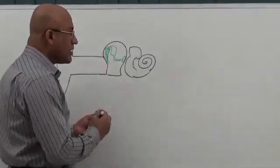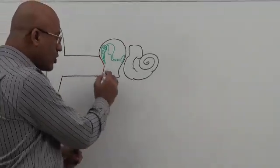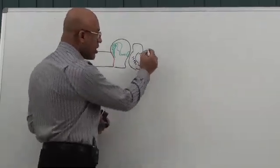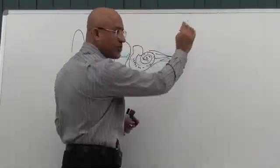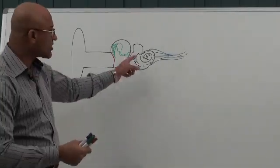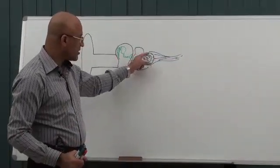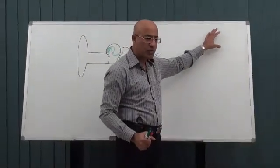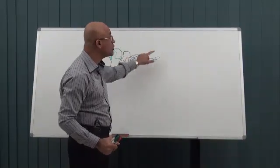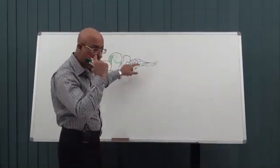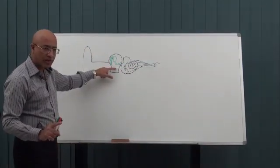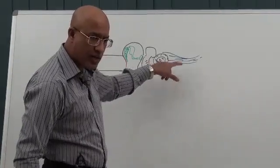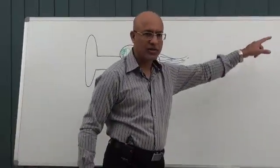But if deafness is not due to the external ear or middle ear, but due to the inner ear — either the organ of Corti is not functional, the cochlear nerve is not functional, or the central auditory pathways are not functional — then this kind of deafness is called sensorineural deafness. Conductive deafness occurs due to external and middle ear functional impairment, while sensorineural deafness occurs due to organ of Corti dysfunction, cochlear nerve lesions, or central auditory pathway lesions.